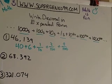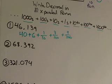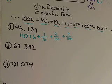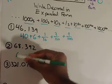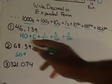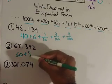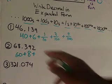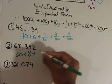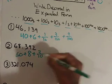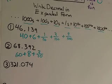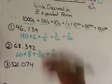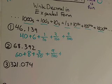Let's look at the next one. We've got 68.392. So the six is in the tens place, so I'm going to put 60, plus the eight in the ones place, eight. The next place value is three, and that's in the tenths place, so three over ten. The nine is in the hundredths place, so that is nine over a hundred. And the two is in the thousandths place, so that is two over a thousand.